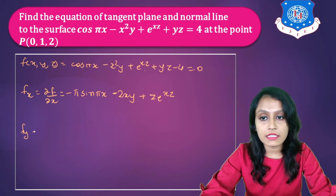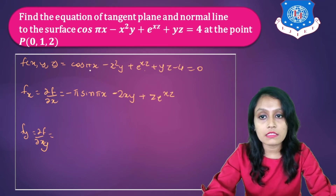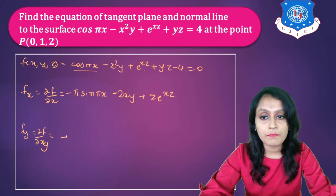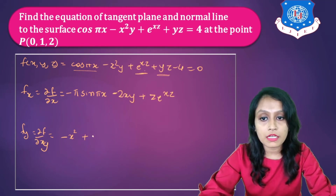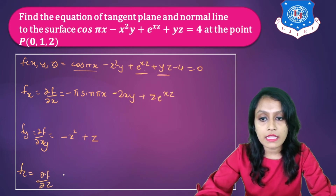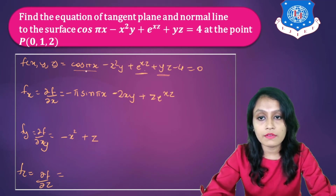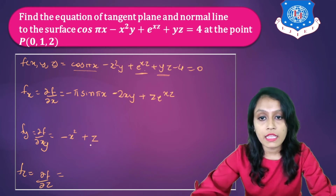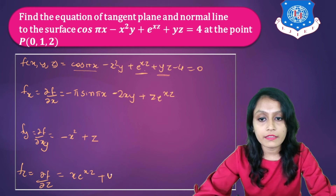Now let's find Fy, the partial derivative of F with respect to y, keeping x and z constant. The first term gives 0, from −x²y you get −x², the exponential e^(xz) gives 0 since x and z are constant, and from yz you get z. Then Fz, the partial derivative with respect to z: x and y are constants, so the cosine and −x²y terms give 0. From e^(xz) you get x·e^(xz), and from yz you get y.